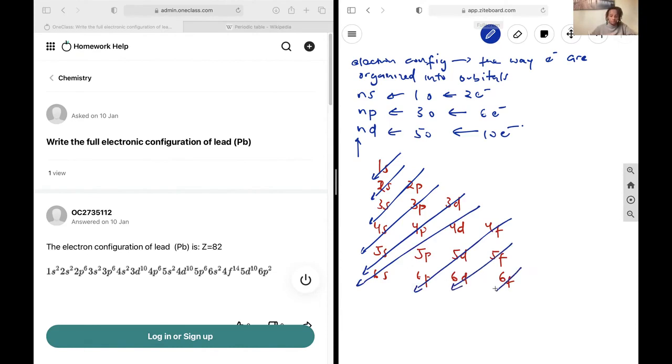And so you'd fill 1s2, 2s2, 2p6, let me just write that out: 3p6, 4s2, 3d10, 4p6.